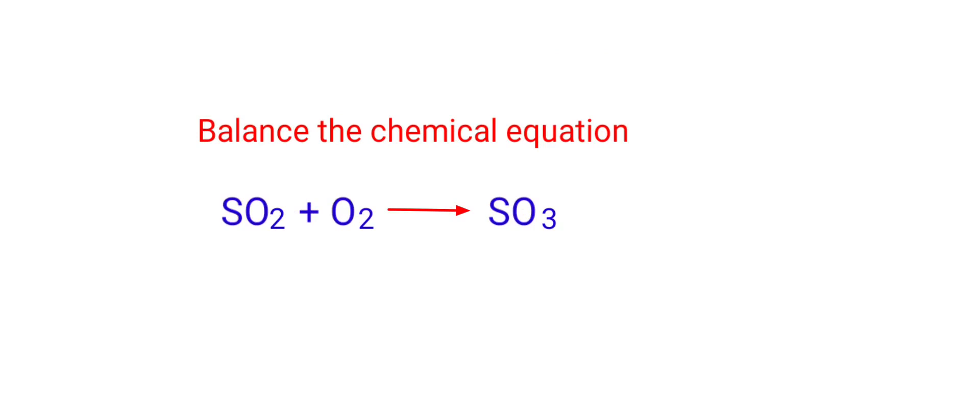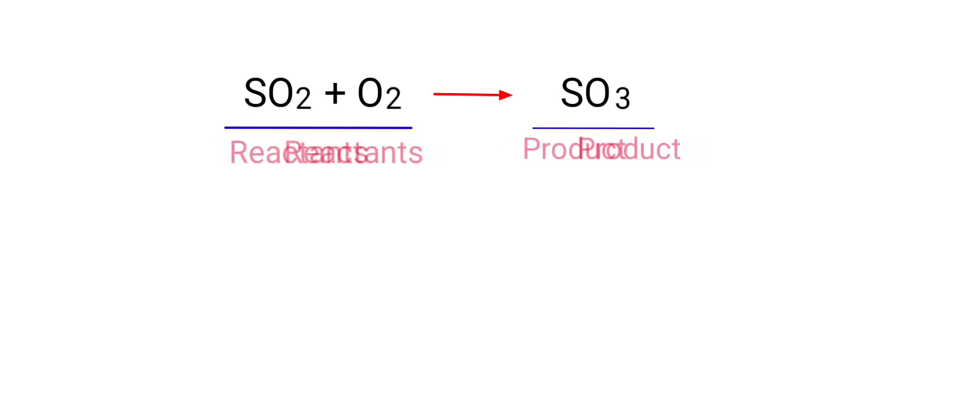Sulfur Dioxide plus Oxygen gives us Sulfur Trioxide. In this equation, the reactants are Sulfur Dioxide and Oxygen, and the product is Sulfur Trioxide.